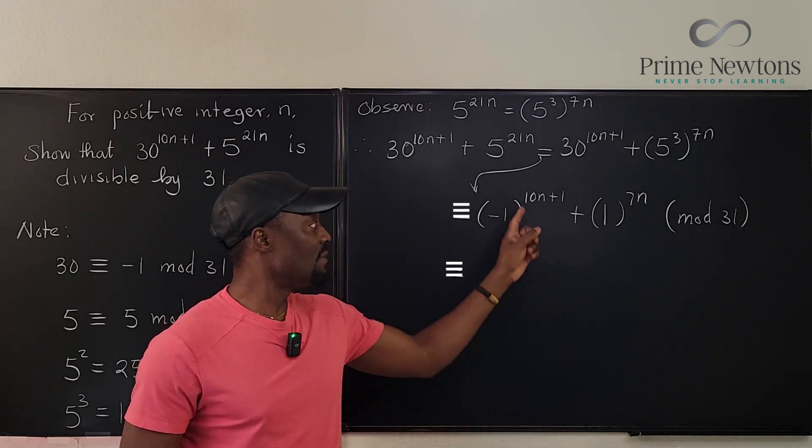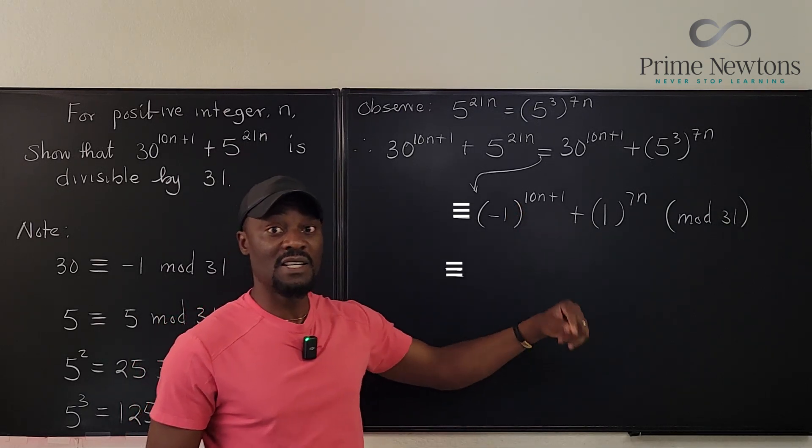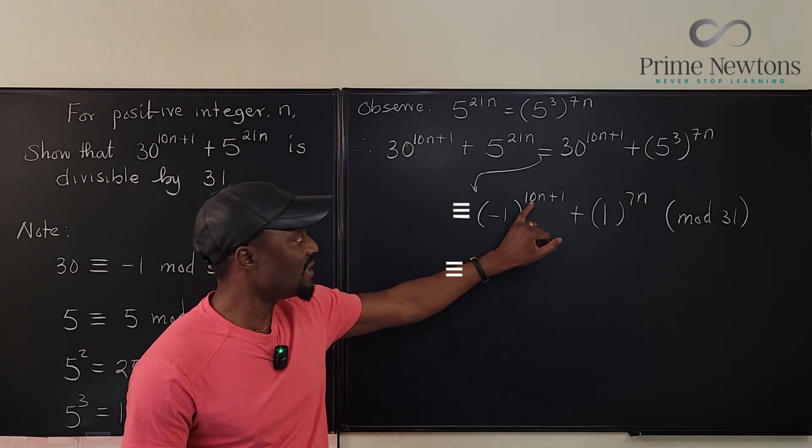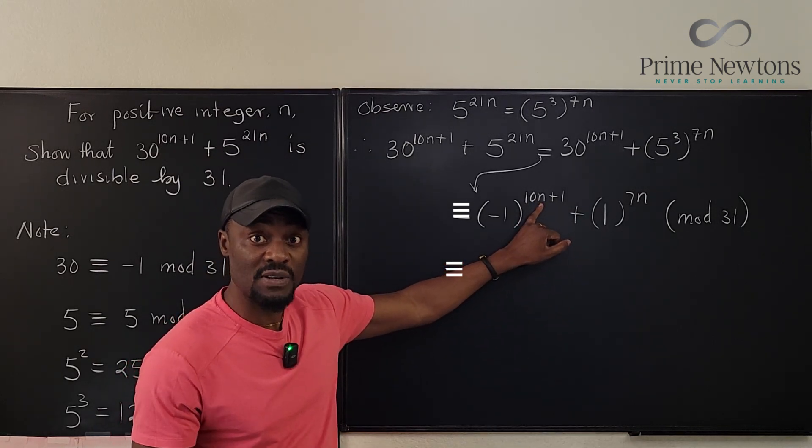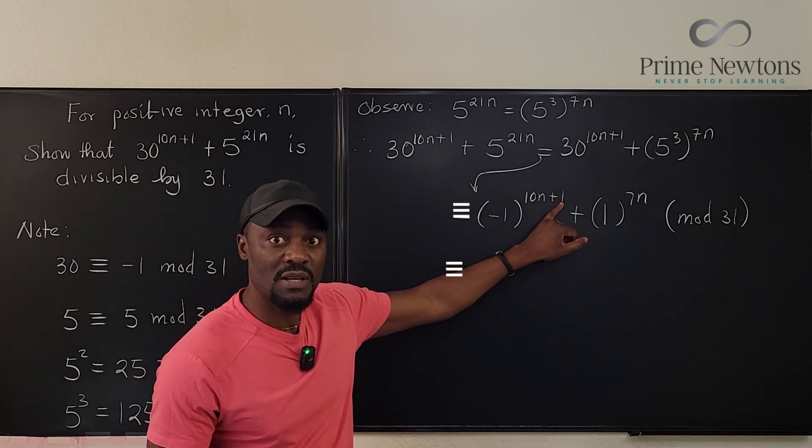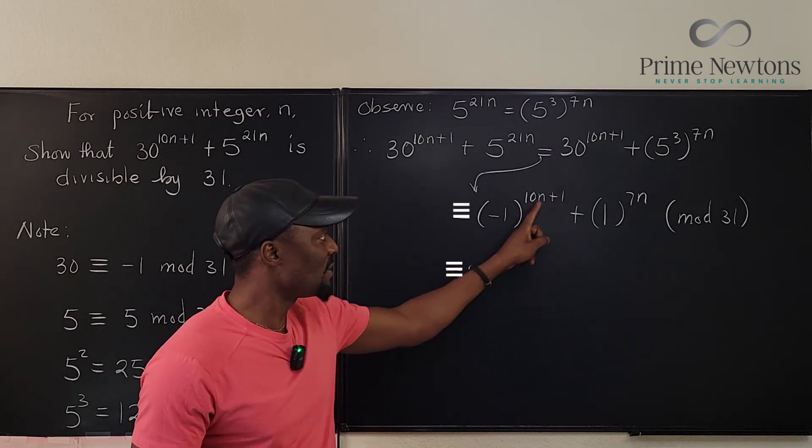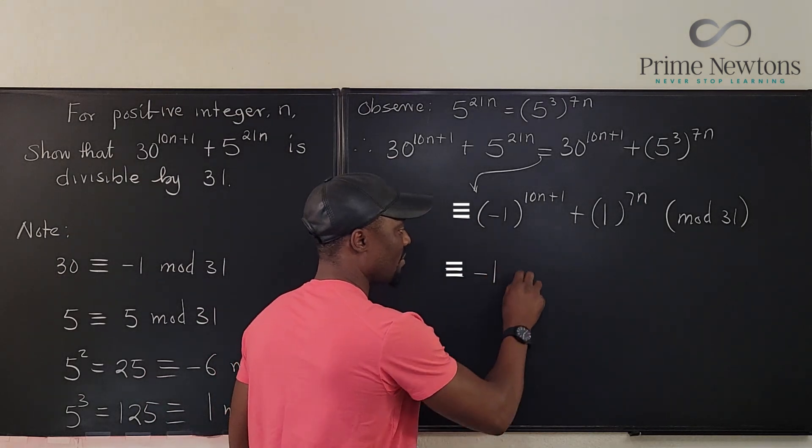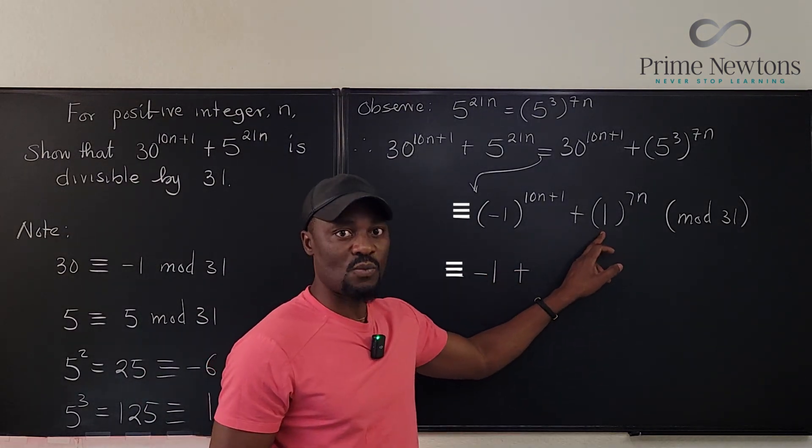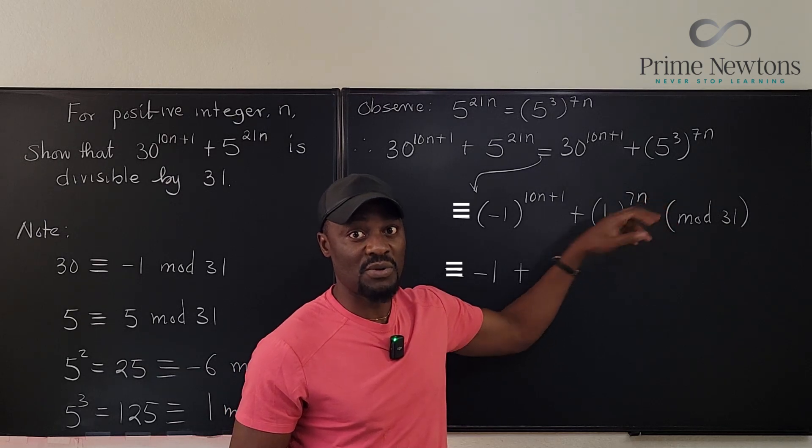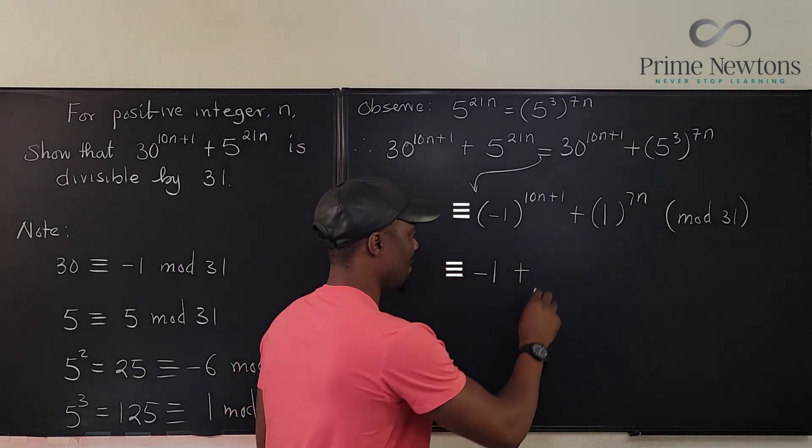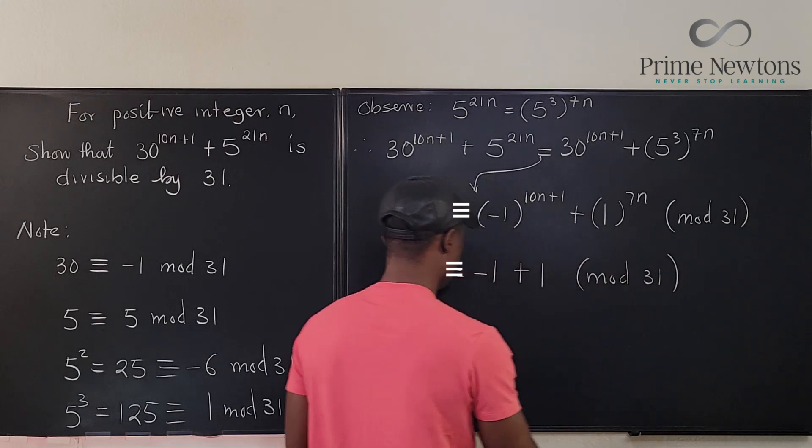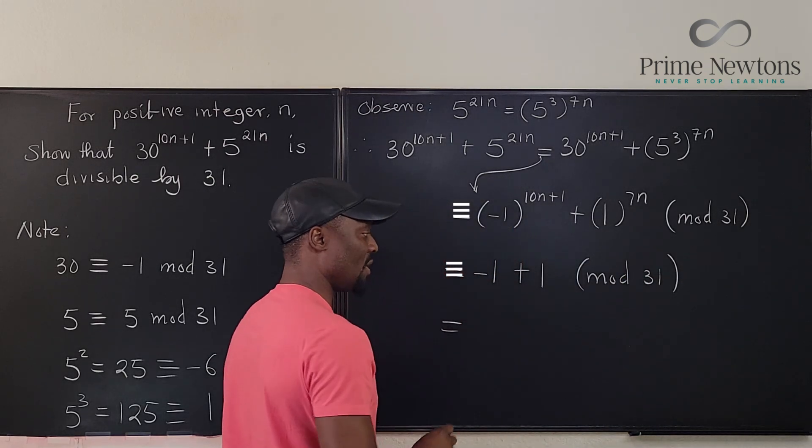So a negative 1 raised to any power is either 1 or minus 1. It is 1 if this power is even. It is negative 1 if the power is odd. Looking at this, because this is an integer, 10 times an integer is always even. And an even number plus 1 is always odd. So this power is odd. So this stays as minus 1 plus. This is 1. 1 raised to power 1. Guess what? Minus 1 plus 1 is 0.